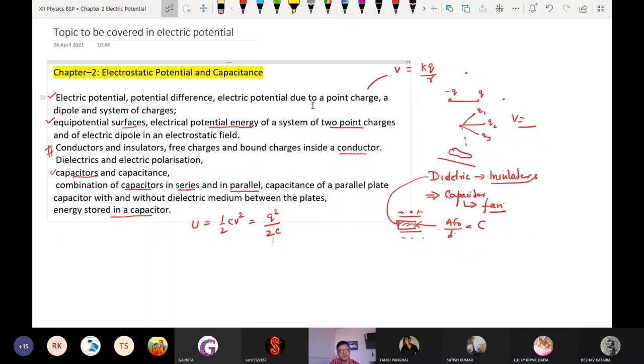This chapter one and chapter two as a whole, it becomes the part of the electrostatics. So under this chapter we will discuss these four important areas. For example, potential due to a point, potential due to a dipole, system of charges.